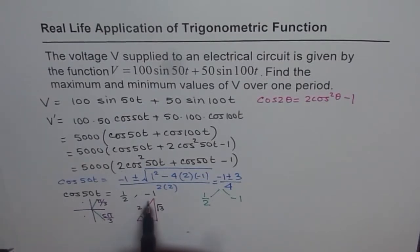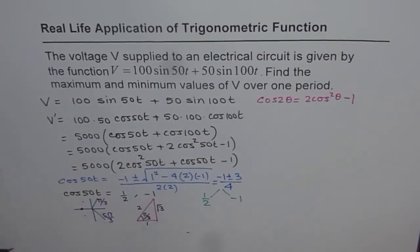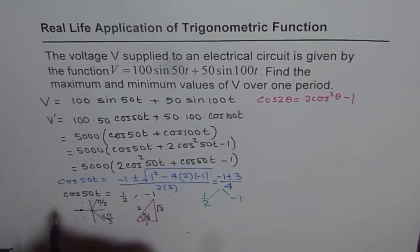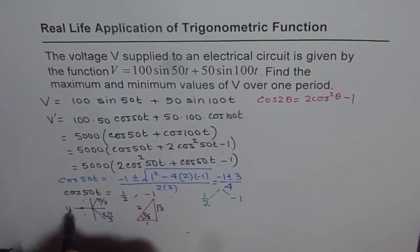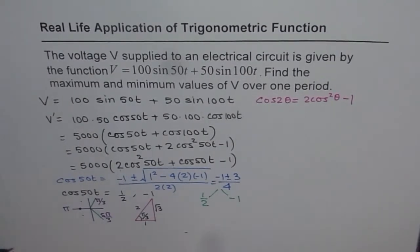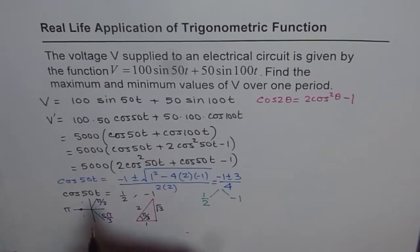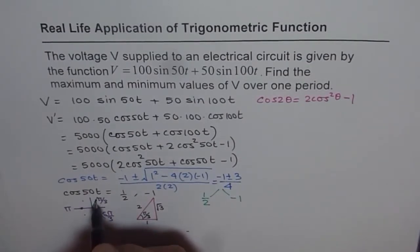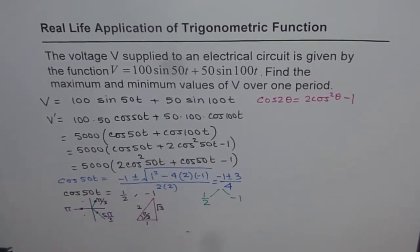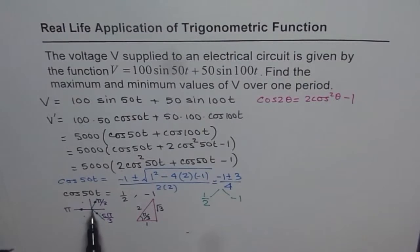For cos(50T) equals minus 1, cosine equals minus 1 at π. So we have three critical point candidates: 50T equals π/3, π, and 5π/3.